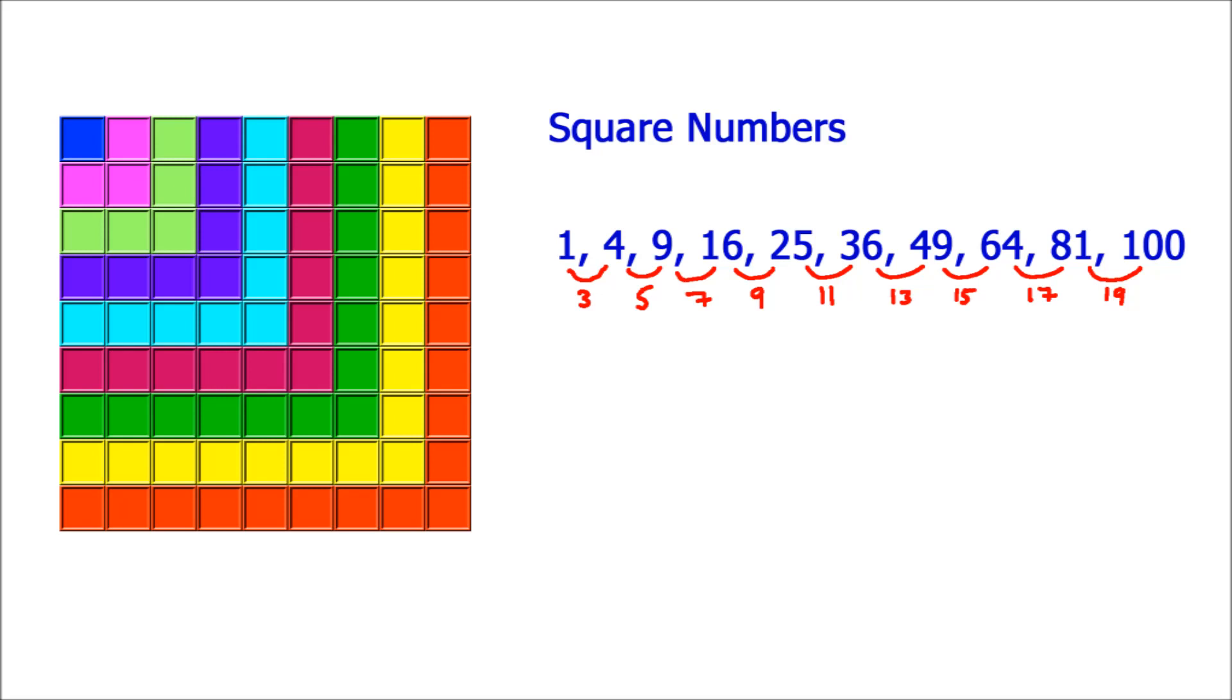So we've got a good understanding of what square numbers are. If we multiply any whole number by itself, we get a square number. And if we had that number of square tiles, we could arrange them into a square.